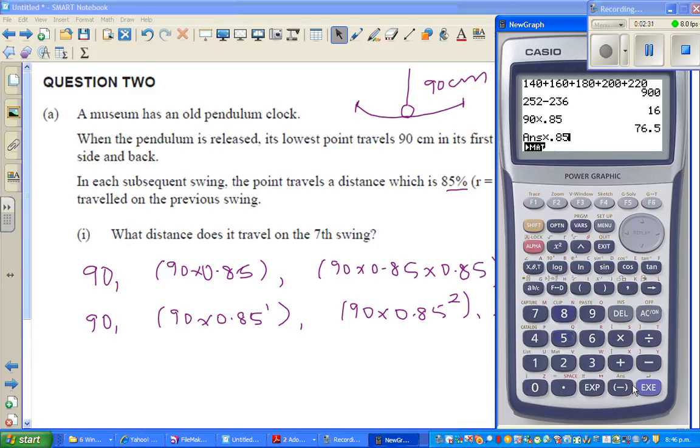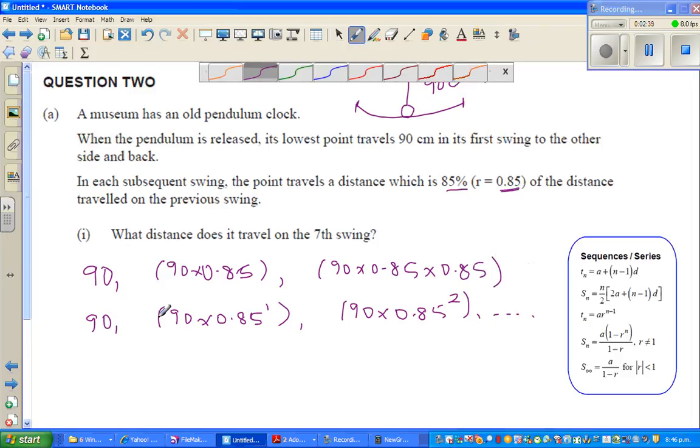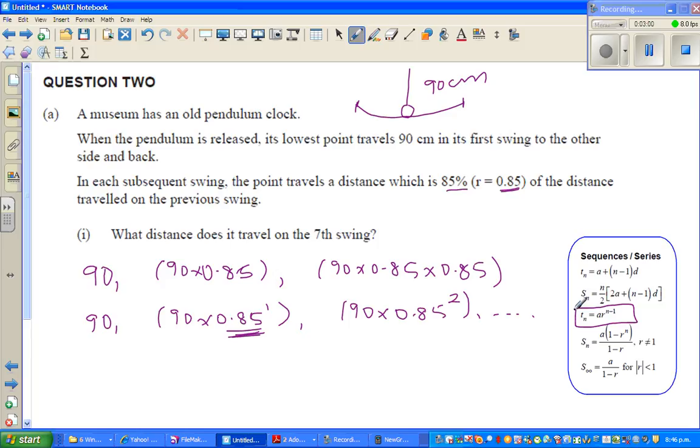This is a geometric sequence because it's decreasing by a product. In an arithmetic sequence, it increases or decreases by a sum, whereas here it's decreasing by multiplying a number. So the formula for a geometric sequence is TN equals A times R to the power N minus 1.